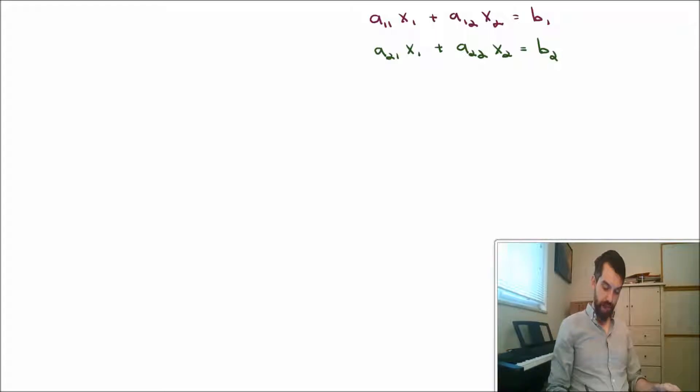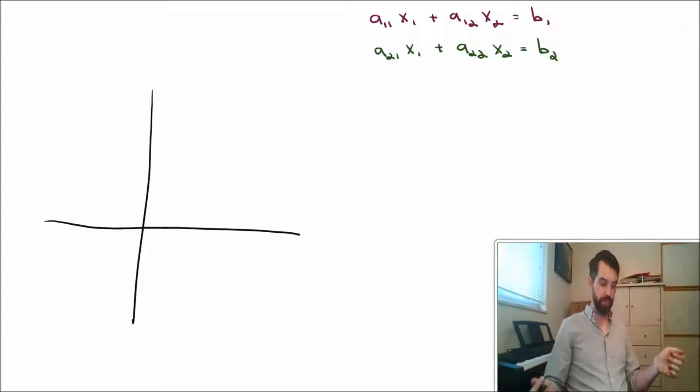So let's see what's going to happen if I go and try to graph this. Now, this first equation, we know there's two possibilities. Either it's a line, or there's no solution to it. So let me assume it's going to be a line. I'm going to put it in there.